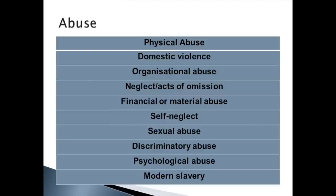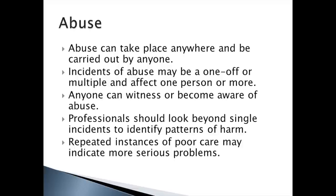Abuse listed in the Care Act 2014 includes physical abuse, domestic violence, organisational abuse (as opposed to the term 'institutional abuse'), neglect, acts of omission, financial or material abuse, self-neglect, sexual abuse, discriminatory abuse, psychological abuse, and modern slavery. The Act also states that abuse can take place anywhere and be carried out by anyone. Incidents may be one-off or multiple and affect one or more persons. Professionals should look beyond single incidents to identify patterns of harm, as repeated instances of poor care may indicate more serious problems.